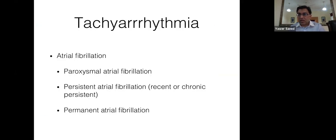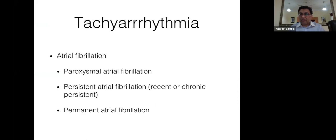Atrial fibrillation can be divided into three types. Paroxysmal AF comes and goes by itself. Persistent AF lasts more than 24 hours and requires drugs or electrical cardioversion to restore rhythm. Then there is permanent AF, where we accept the rhythm and do not attempt to restore normal sinus rhythm. These distinctions matter for management decisions.